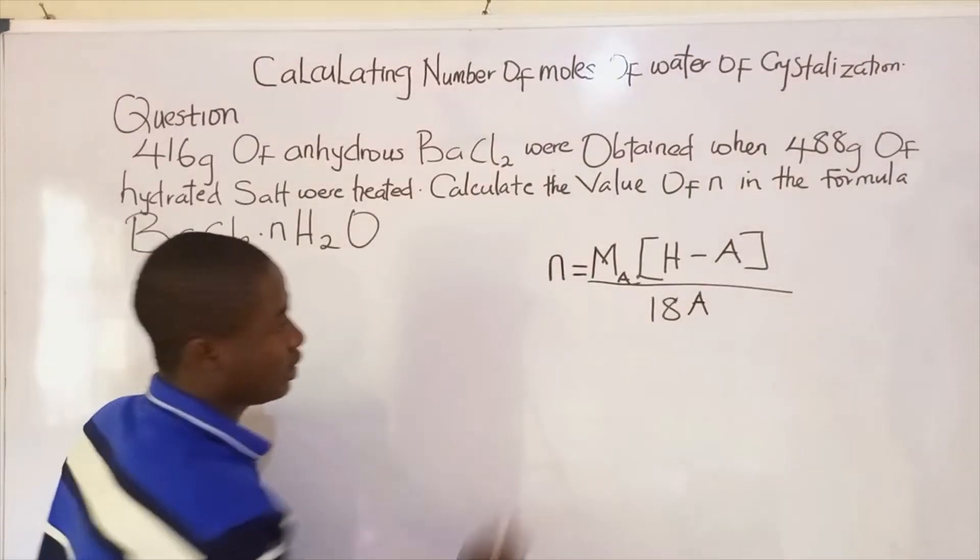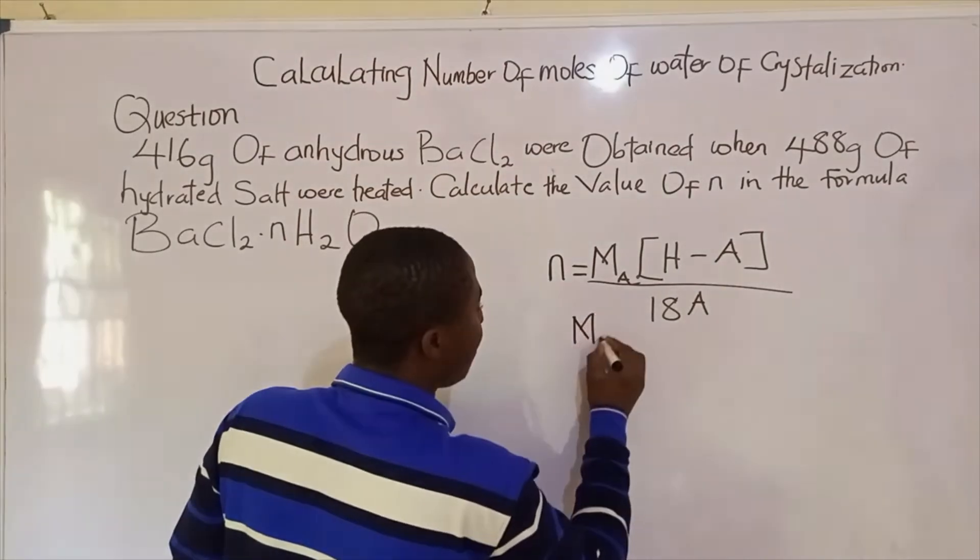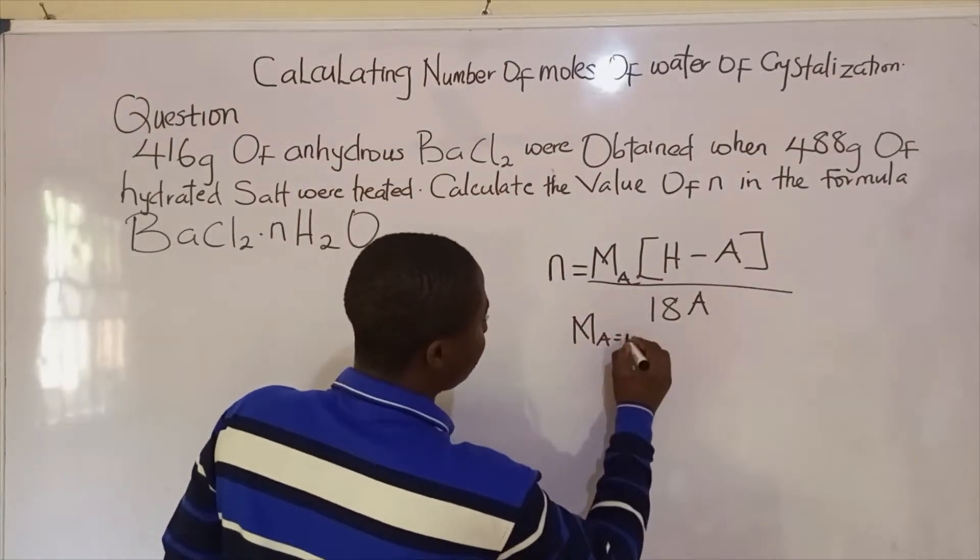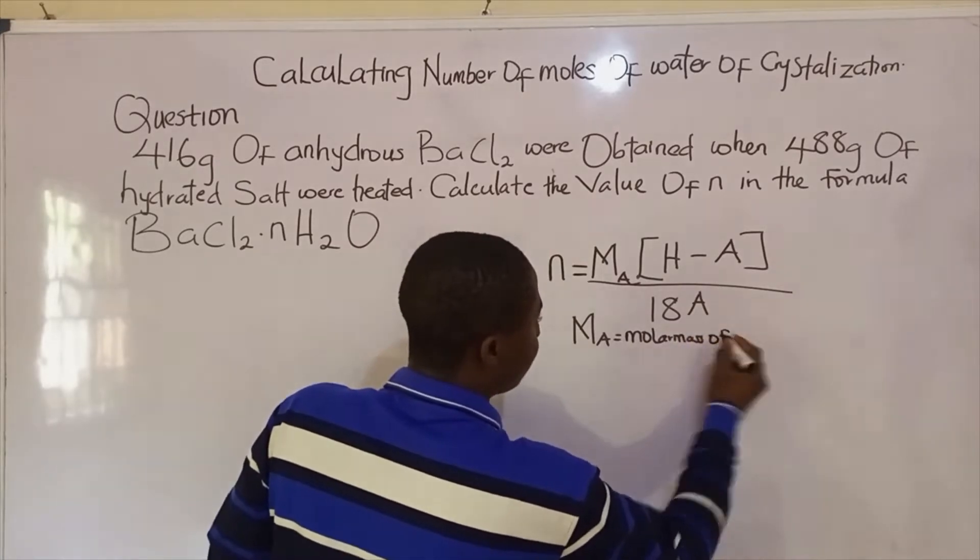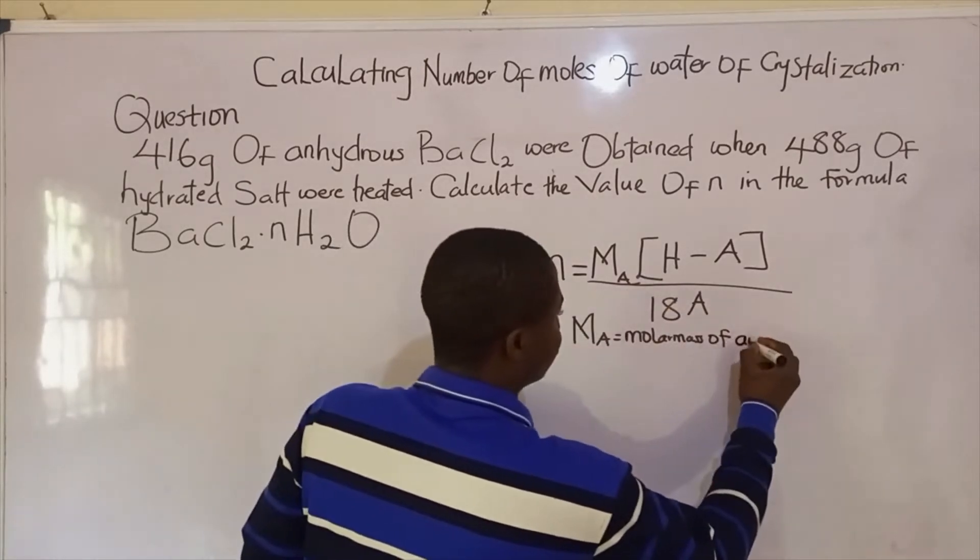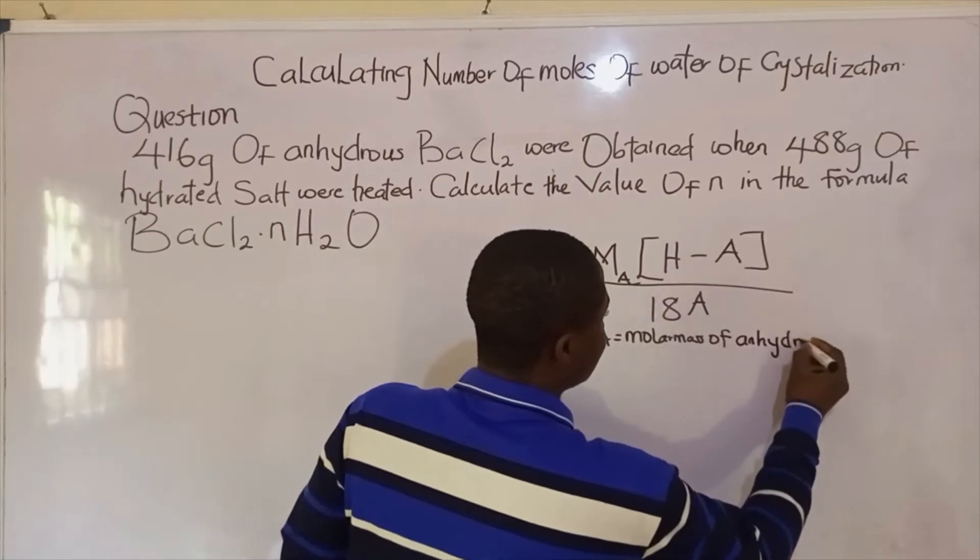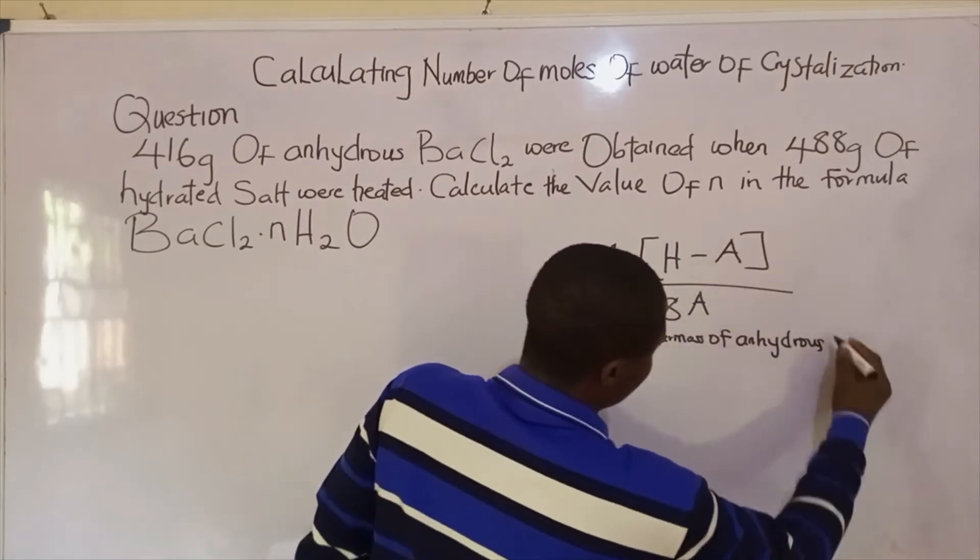What do I mean? What is MA? It is simply molar mass of anhydrous salt, or you say molar mass of the anhydrous compound.